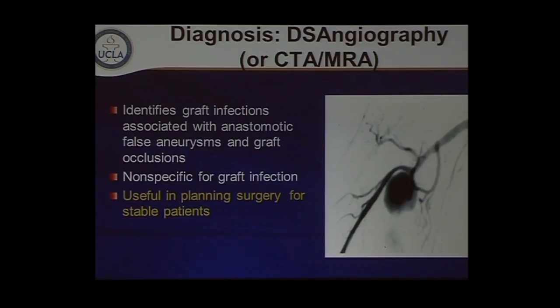We use CT angiography because the CT scan diagnoses the infection and the CTA identifies the anatomy. It's absolutely crucial that we know where the proximal anastomosis is, whether it's end-to-end or end-to-side, and whether there are any side branches — this allows for much better planning. We rarely do conventional angiography; our preference is CTA for planning in these patients.